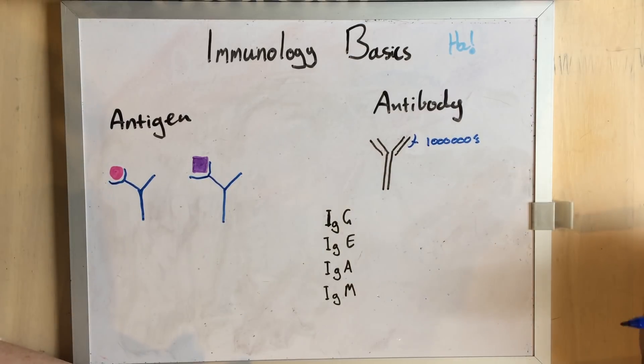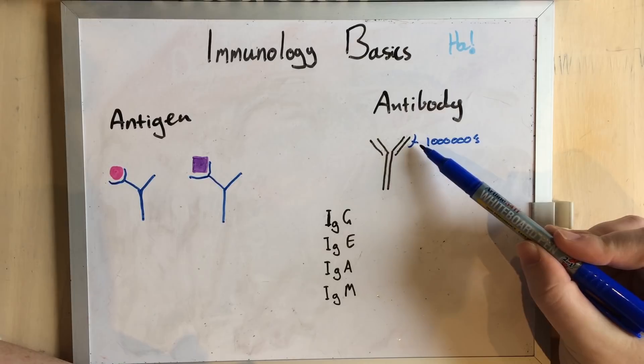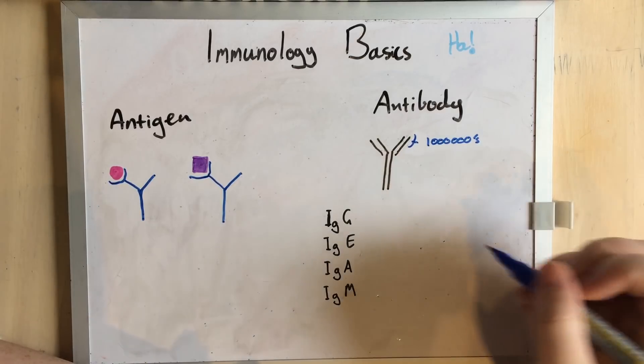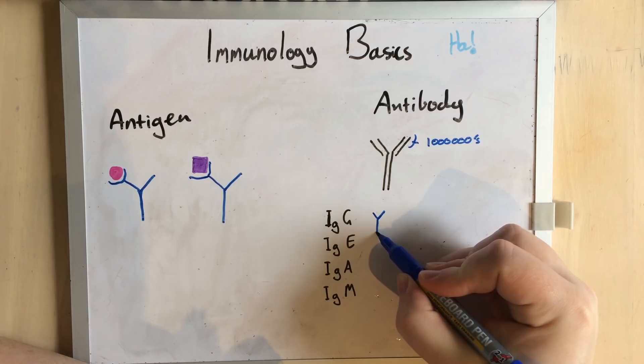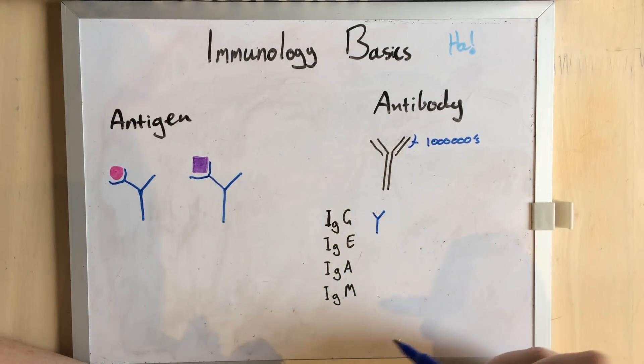Now, there's lots of different types of immunoglobulins in addition to the potentially millions of different sorts of antibody-binding sites. IgG and IgE are fairly simple. These are just in mammals, by the way.